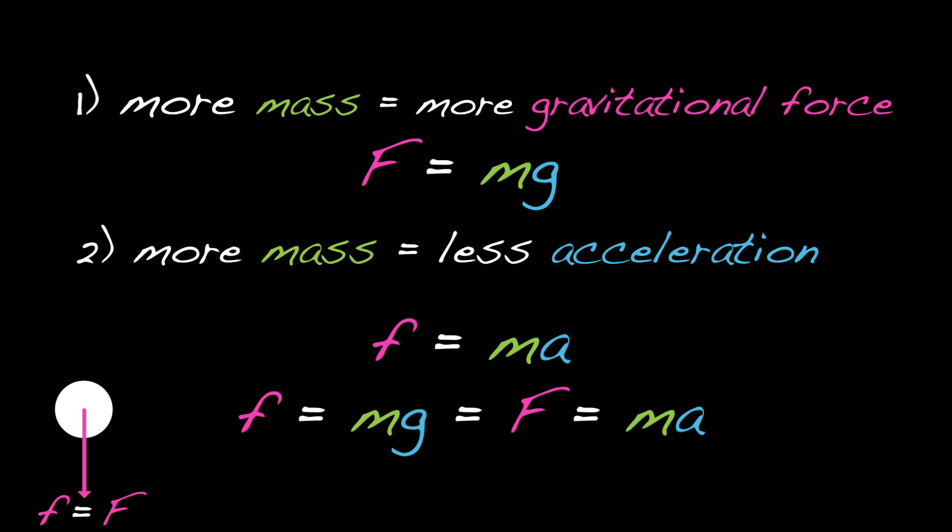Or more simply, mg is equal to ma. Notice that m cancels, leaving just g is equal to a. That is, the acceleration of a particle when acted on only by gravity is independent of the mass of the particle. This is why objects of different mass fall at the same rate.